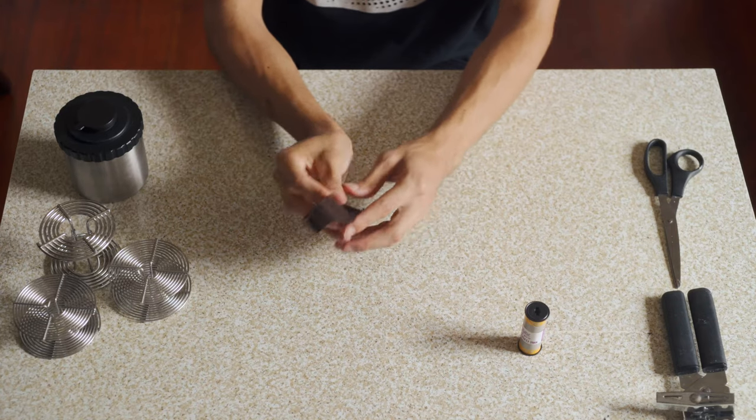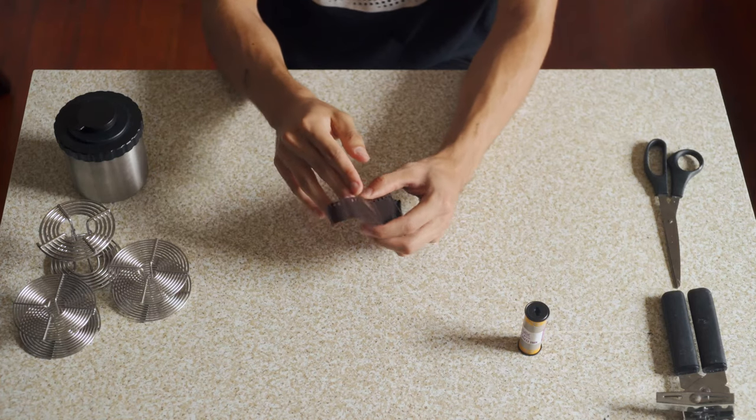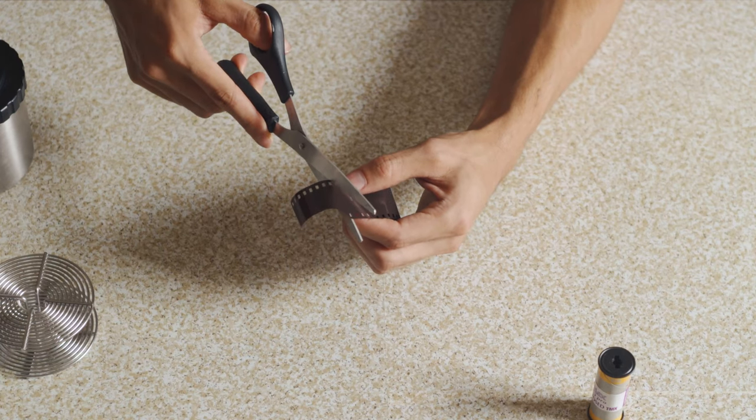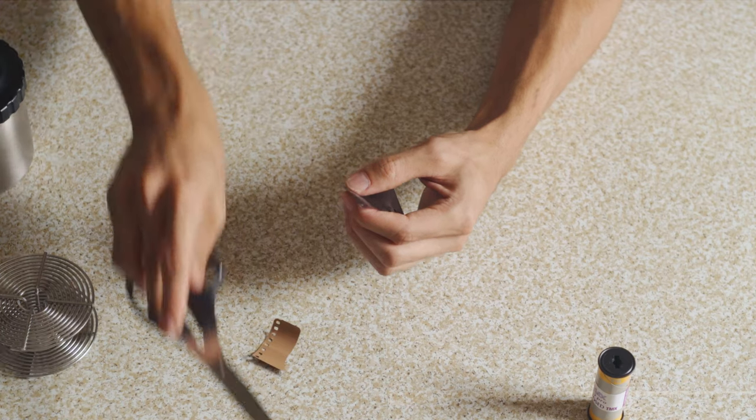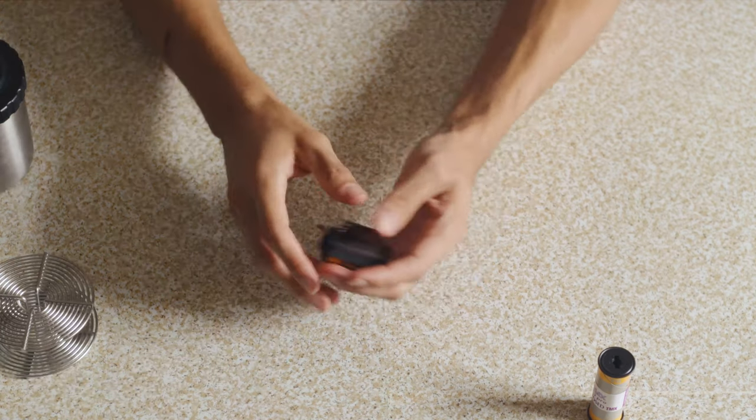Again, this is happening in the dark. So you want to find the tongue, and then you want to cut off this little edge right here. You want to cut it as straight as you can. It's not going to be perfect in the dark, but close enough is good.